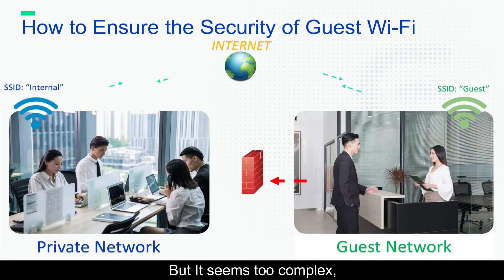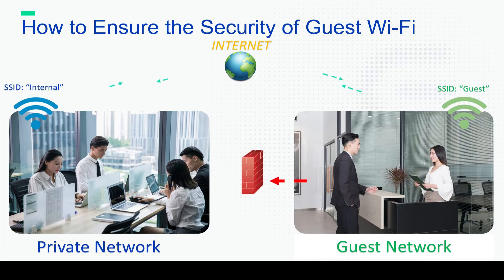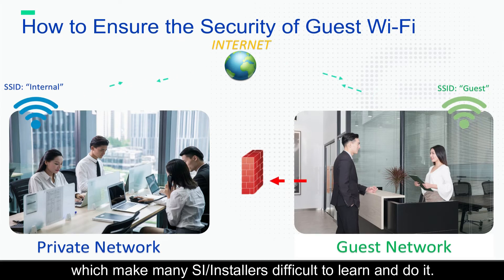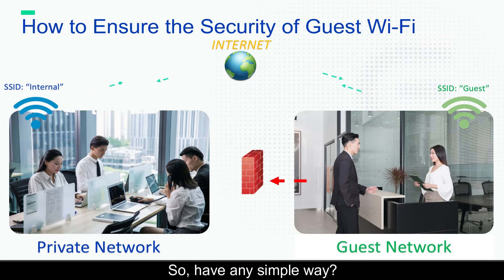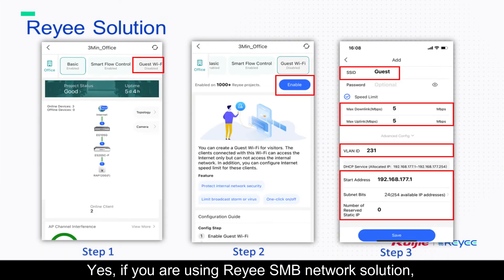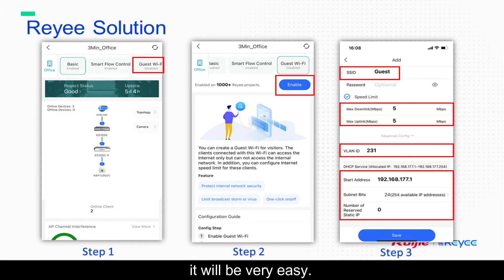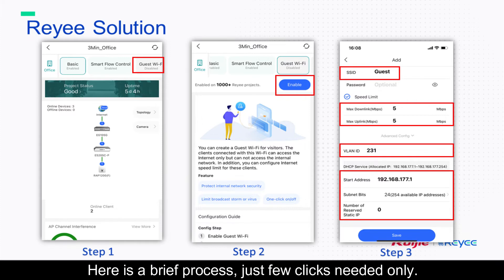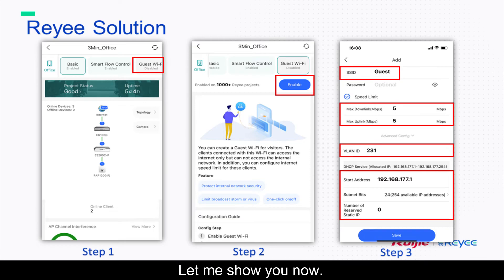But this seems too complex, making it difficult for many system integrators and installers to learn and implement. Is there a simpler way? Yes — if you are using the RGRE SMB network solution, it will be very easy. Here is a brief process; just a few clicks are needed. Let me show you now.